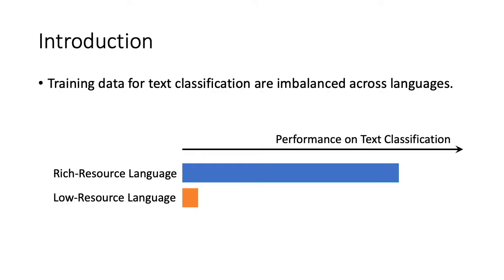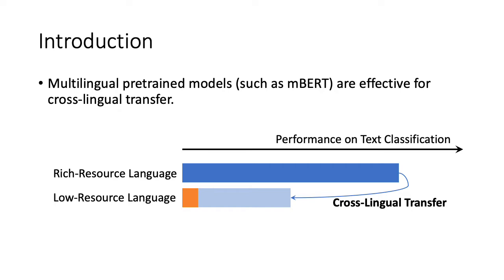We know that training data for text classification are imbalanced across languages. Most training data are only available in rich-resource languages, such as English, and it requires great efforts to make this data available in low-resource languages. Multilingual pre-trained models have shown surprising cross-lingual transferability on downstream tasks — by learning examples in a rich-resource language, they can directly perform the learned task in other languages.